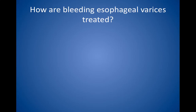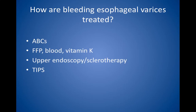How are bleeding esophageal varices treated? First, think of the ABCs — airway, breathing, and circulation. Stabilize the patient with intravenous fluids and blood if needed. If indicated, correct clotting factor deficiencies with fresh frozen plasma, fresh blood, and vitamin K. Next, perform upper endoscopy to determine the cause of the upper GI bleed. Once varices are identified on endoscopy, sclerotherapy of the veins is attempted with cauterization, banding, or vasopressin.